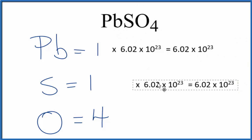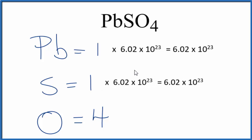Same thing for the sulfur. We multiply that one sulfur atom by Avogadro's number, that gives us the number of sulfur atoms in one mole of lead two sulfate.